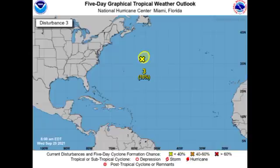Let's get started with the disturbance located out in the open Atlantic. This is given a low 10% chance to develop, so nothing much is really going to become of this. It is associated with the remnants of Peter, and development is unlikely because it is accelerating more to the north and into much cooler waters.